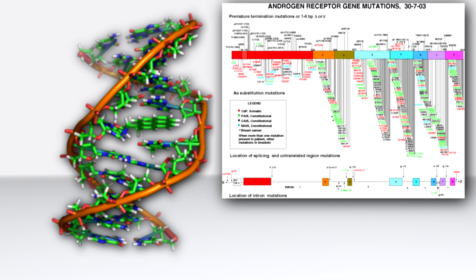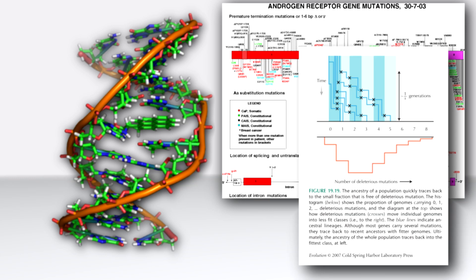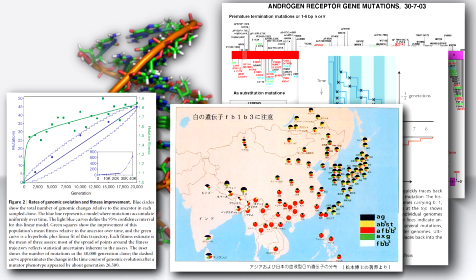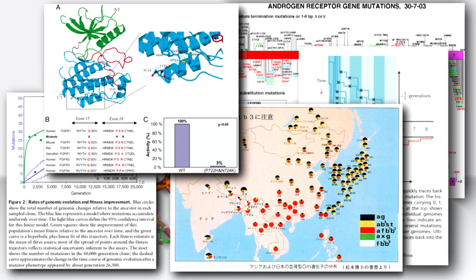Decades of subsequent research across numerous disciplines have explored the rate of mutation through statistical analysis, geographical distribution, embryology, and morphology, and they've all confirmed Darwin's basic theory. Anyone that says that there isn't any evidence for evolution or that the evidence is weak has probably not read Darwin's 150-year-old book.